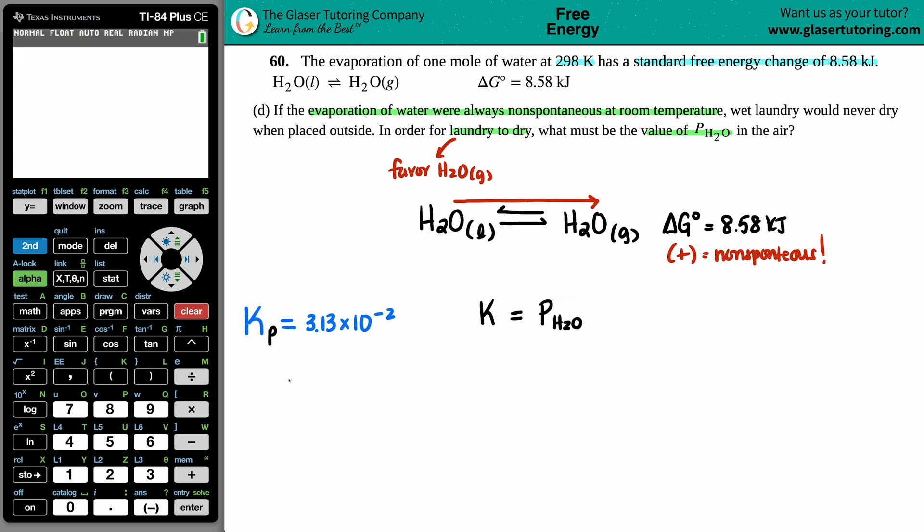This is the link to the problem. We found out already that the K value—it doesn't matter necessarily that it's a Kp—but the K value is 3.13 times 10 to the negative 2. But now, if we know that the K value and the partial pressure are equal to each other, we now know where the cutoff is.